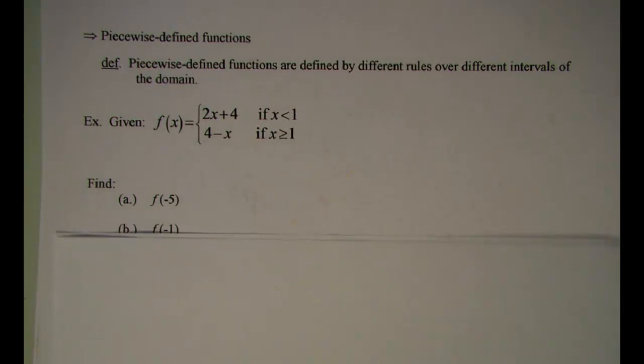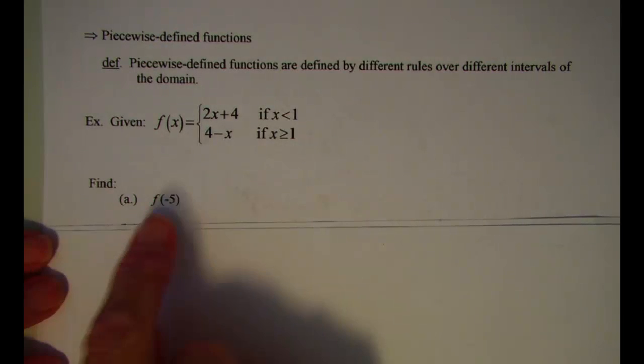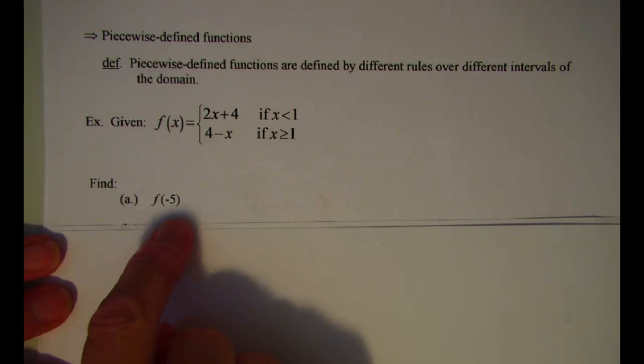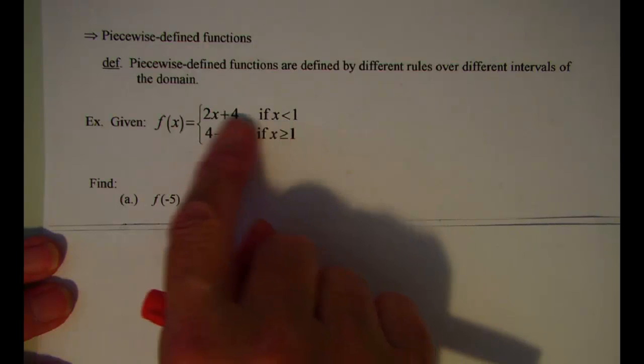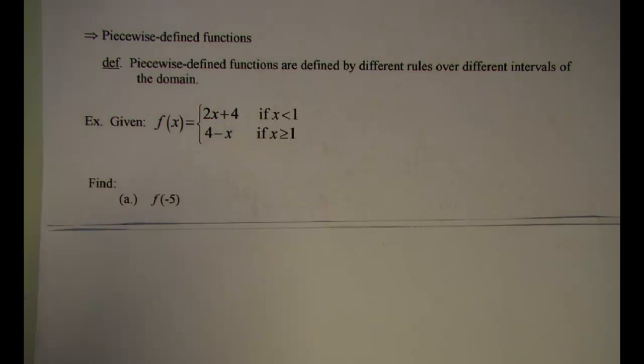Now we can evaluate piecewise-defined functions. If I were asked to find f of negative 5, that means x is equal to negative 5 and I want to find the y value that's associated with that. If x is negative 5, that means I'm going to have to use the first rule or the top rule.